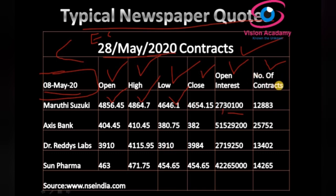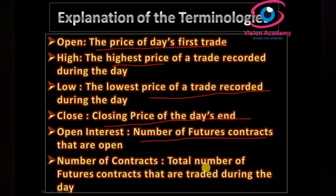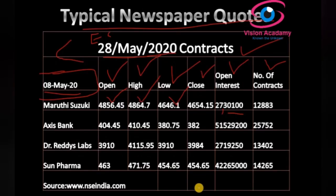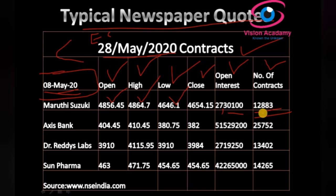The final element is Number of Contracts — the total number of futures contracts traded during the day. For example, on 8 May 2020, for Maruti Suzuki, 12,883 contracts were traded. That is the number of contracts traded during the day on 8 May 2020.